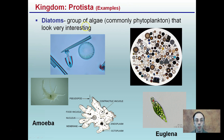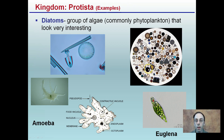Some examples from protists: diatoms are a group of algae, commonly phytoplankton, that look very interesting. If you look at some of these, they have very unique shapes and are very symmetrical in some instances. Their visual interest causes them to be used in a lot of posters and other mediums. These are diatoms, which are under the kingdom of protists.